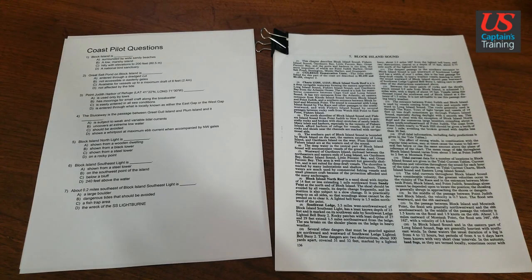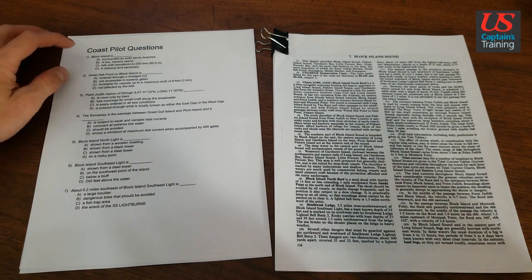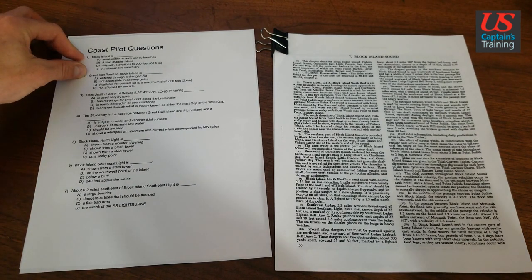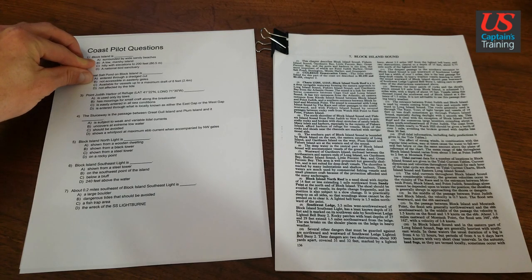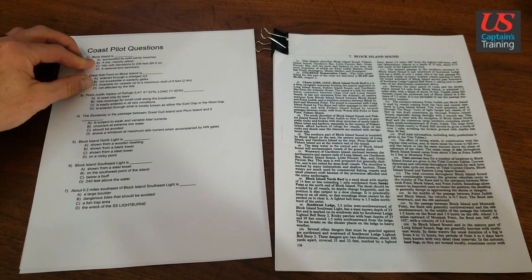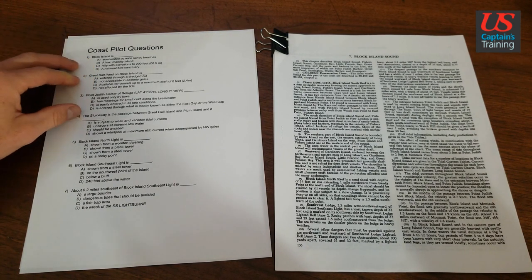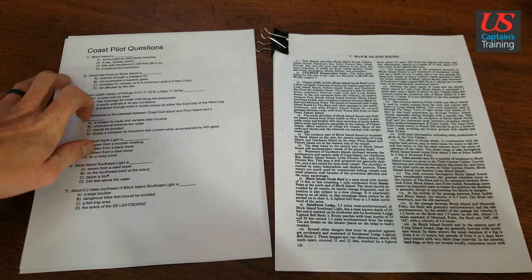Coast pilot question number two reads: Great Salt Pond on Black Island is, and your choices are: entered through a dredge cut, not accessible in easterly gales, available for vessels up to a maximum draft of eight feet, or not affected by the tide. So let's look up Great Salt Pond.